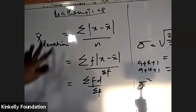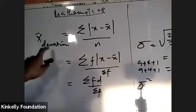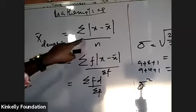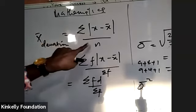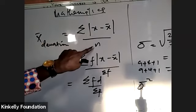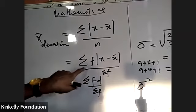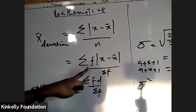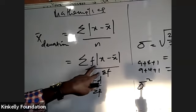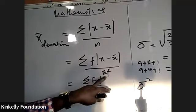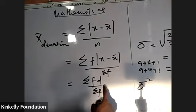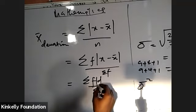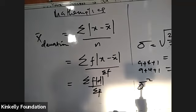In our last class, we did the mean deviation without frequency: the mean deviation is summation of x all over the number of items. When you have frequency, it is summation of frequency times the deviation, all over summation of frequency. The absolute deviation can be taken accordingly.